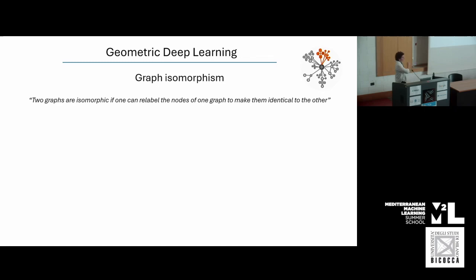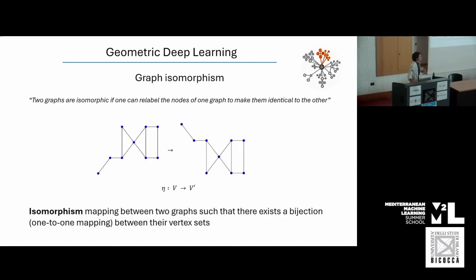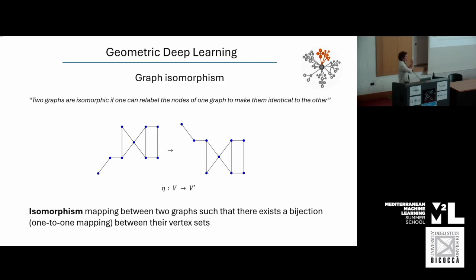Graph isomorphism is a well-known challenge in graph theory and also in many GNN papers. It asks: how can we differentiate two graphs? Unlike a grid domain which is homogeneous everywhere, the structure of a graph can change — so asking the same question to two different graphs may yield the same answer without them being identical. We define two graphs as isomorphic if we can relabel the nodes of one graph to make them identical to the other.